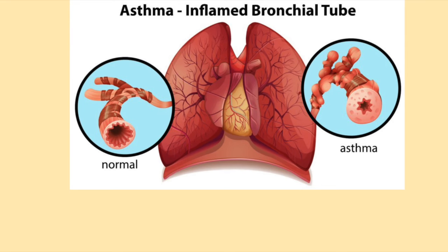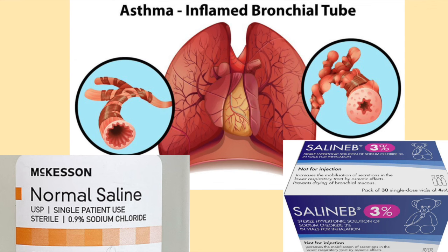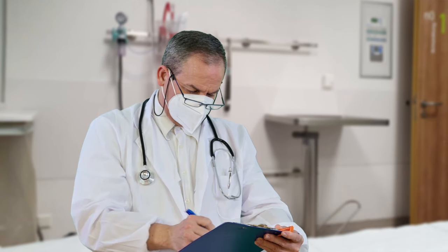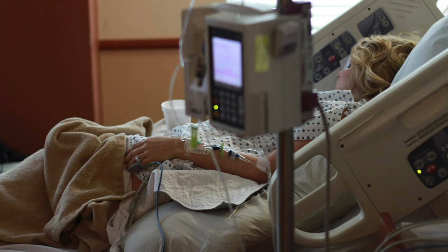For individuals during an asthma attack, researchers studied whether hypertonic saline or normal saline was a better choice in the nebulizer. Researchers who used hypertonic saline noted patients coughed more and coughed up more mucus than those who used normal saline. However, those using normal saline coughed less and seemed to be in less distress. There seemed to be no definitive conclusion about which worked better. Some hospitals have switched to using normal saline for asthma attacks and have had great success, while other hospitals still use hypertonic saline.